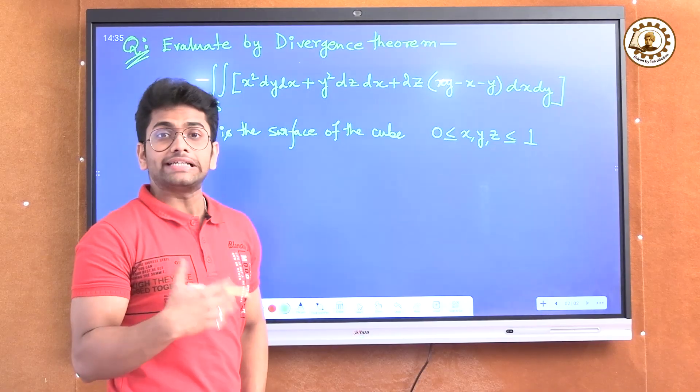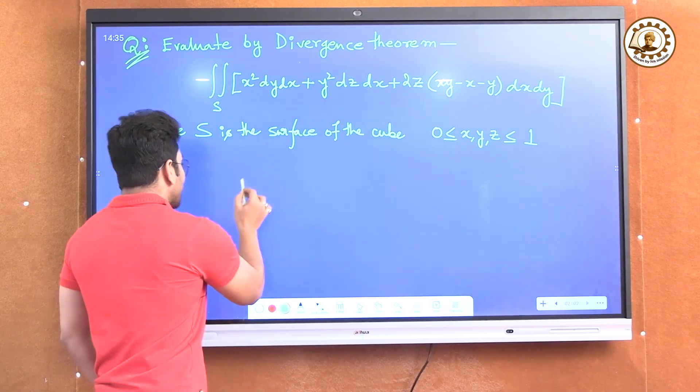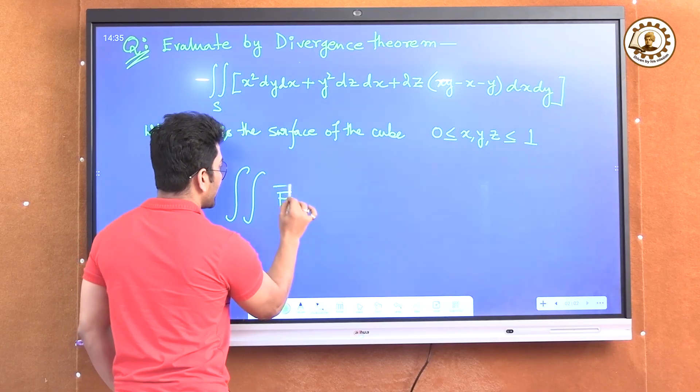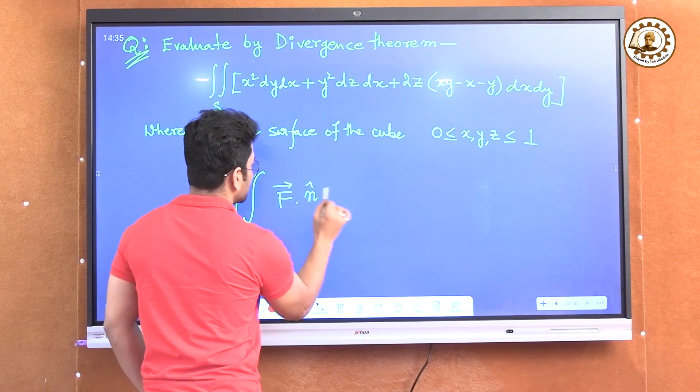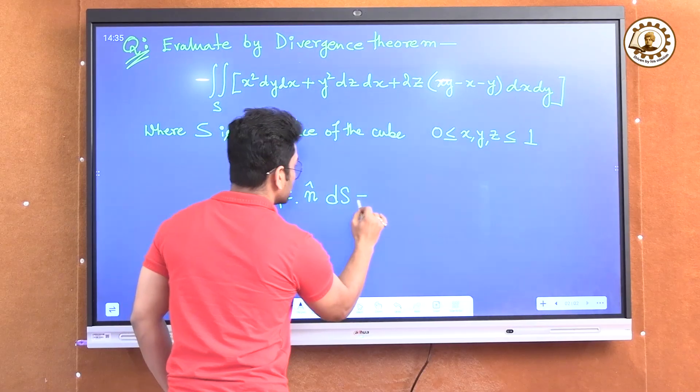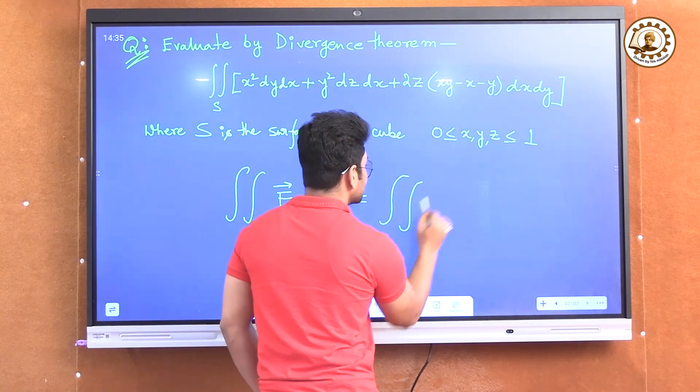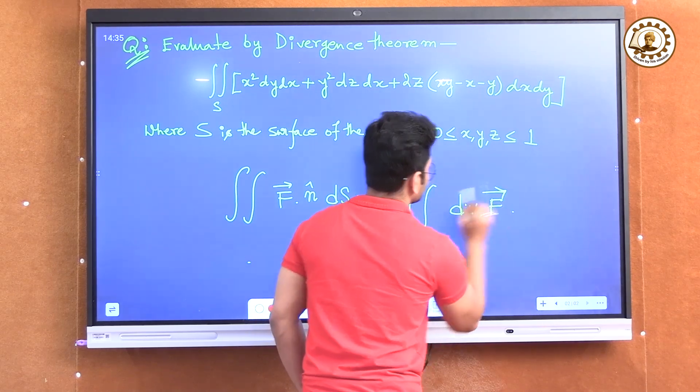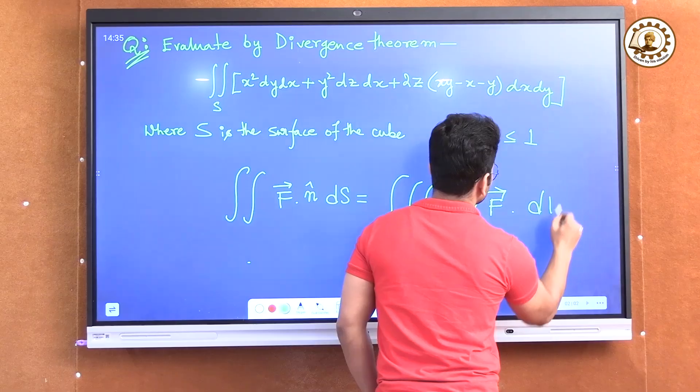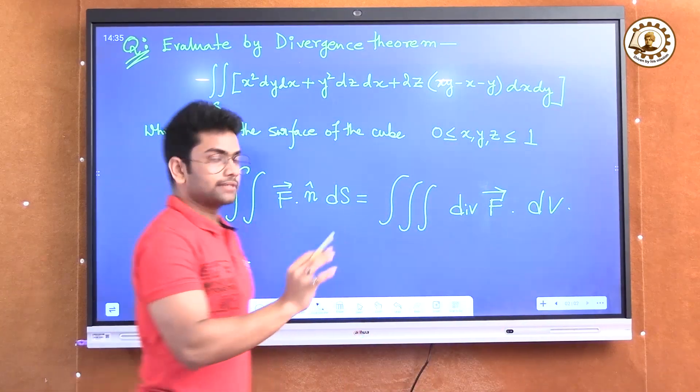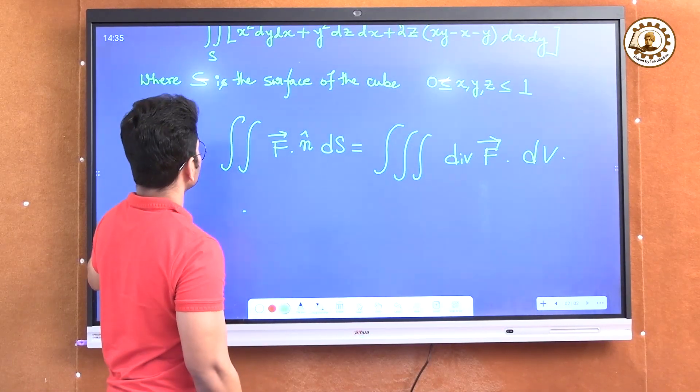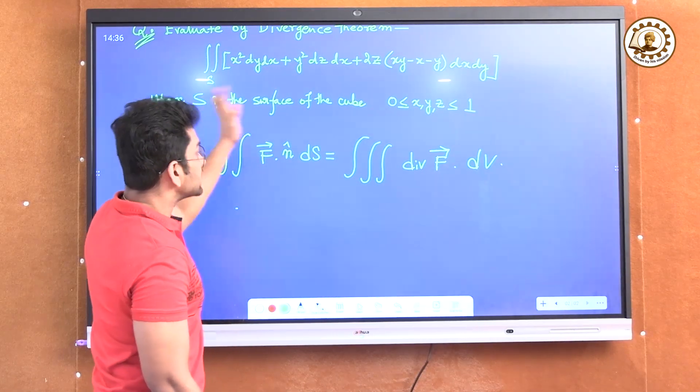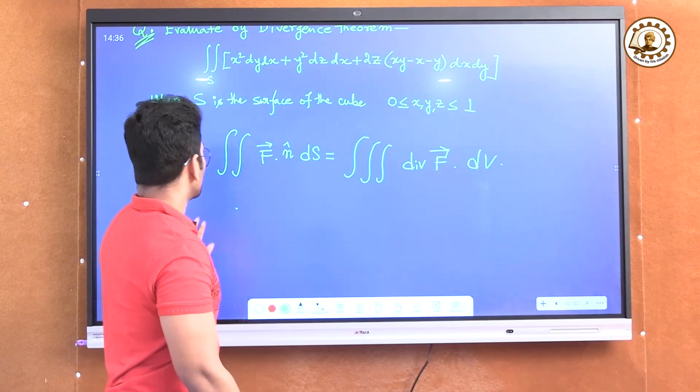At first we have to know what is Divergence Theorem. Divergence Theorem states that double integration f dot n cap dx is equal to triple integral divergence of f into dv. That means the surface integral can be converted into volume integral. This surface integral can be converted into triple integral divergence of f.